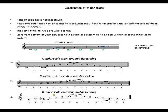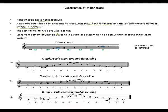The construction of a major scale: a major scale has 8 notes, which is like an octave. It has two semitones. The first semitone is between the 3rd and 4th degree, and the second semitone is between the 7th and 8th degree. The rest of the intervals are whole tones. Start from the bottom of your clef and ascend in a staircase pattern up to an octave, then descend in the same pattern.